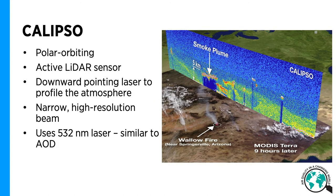The next example is CALIPSO, which stands for Cloud Aerosol LIDAR Infrared Pathfinder Satellite Observations. This is a joint project between NASA in the US and CNES in France. It's a polar orbiting satellite and it's an active sensor. It uses a downward-pointing LIDAR to profile the atmosphere — the laser that it uses is pretty weak and it's eye safe. Because active remote sensing can determine distance of an object, CALIPSO can offer a vertical profile, whereas AOD is just a single value over each point. Because it's a laser, it has a very narrow beam, meaning it has a high resolution, ideal for measuring certain areas of interest such as a smoke plume.